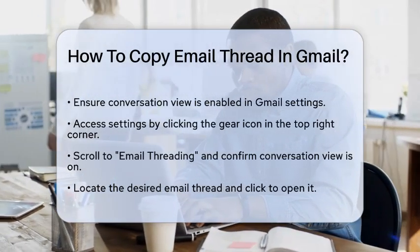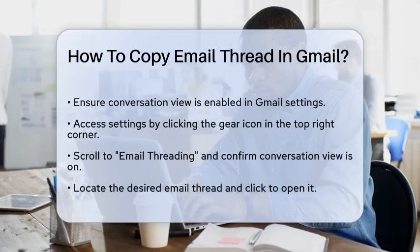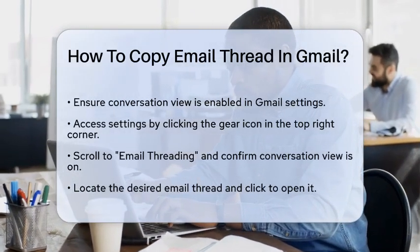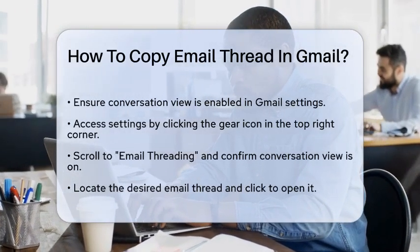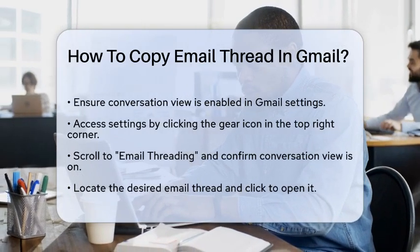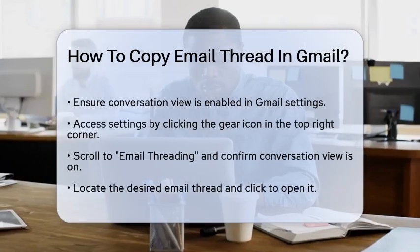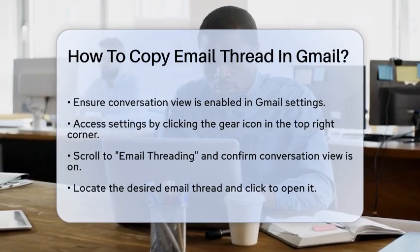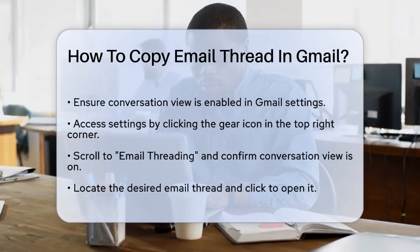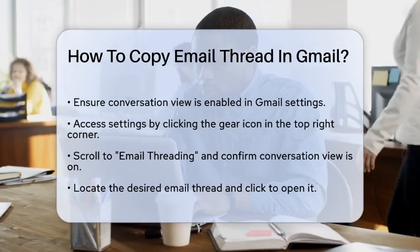First, you need to ensure that the conversation view is turned on in your Gmail account. To do this, click on the gear icon in the top right corner of your Gmail page. This will open the quick settings menu. Scroll down to the Email Threading section and make sure that the conversation view is enabled.